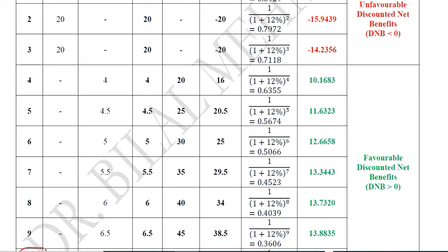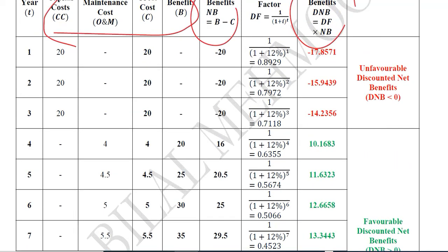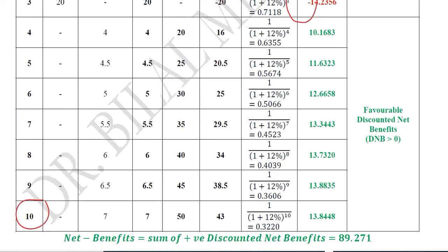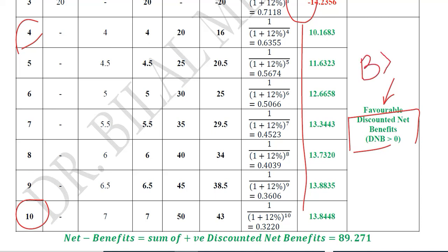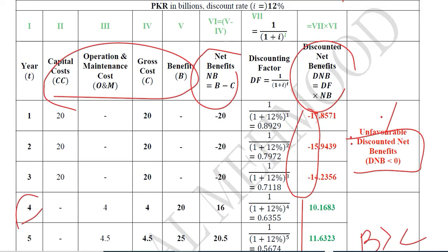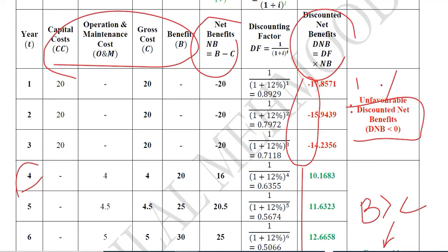The values are shown in two colors: red and green. The red font indicates negative values — these are discounted net benefits that are unfavorable. From the fourth year onward, the net benefits are positive, shown in green, meaning they are favorable because benefits are greater than costs. In the earlier years, costs exceeded benefits, which is the difference between the two.